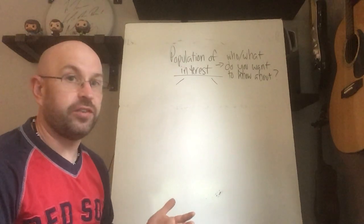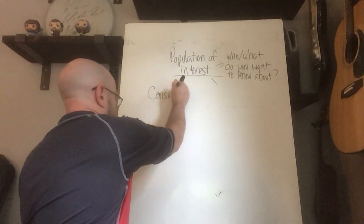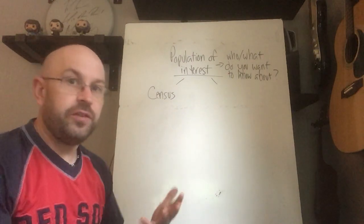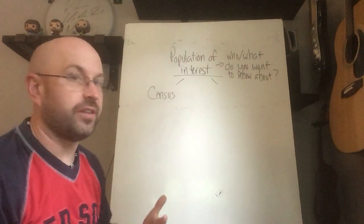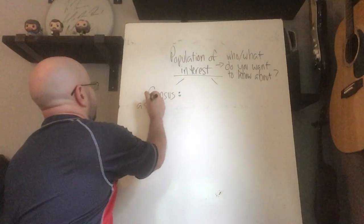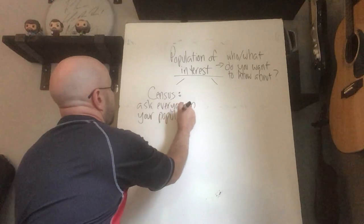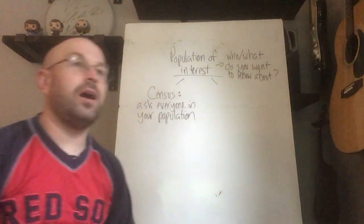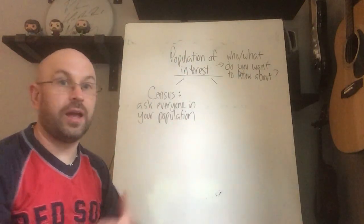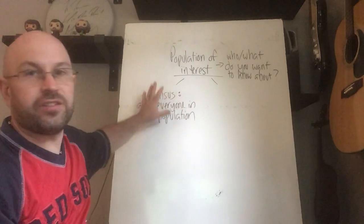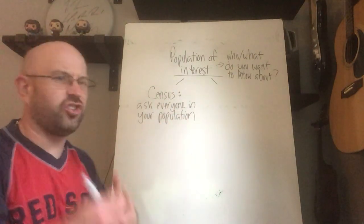Now you have two options once you have that population of interest and you're trying to answer your question. First thing you can do is perform a census. You might have heard about this — every few years the United States does a census, trying to figure out all the people in the United States, reaching out to every single person. That's what the census is: when you ask everyone in your population. Sometimes performing a census is easy, like if you wanted to figure out how many people in your family like Chinese food — you just ask everybody.